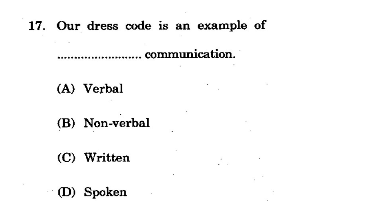Question 17: Dress code is an example of what type of communication? Options: verbal, nonverbal, written, or spoken. The correct option is nonverbal. Without using any words, we communicate through dress - for example, seeing a school uniform tells us which school a student belongs to. This communication happens without any verbal exchange, so dress code is nonverbal communication.